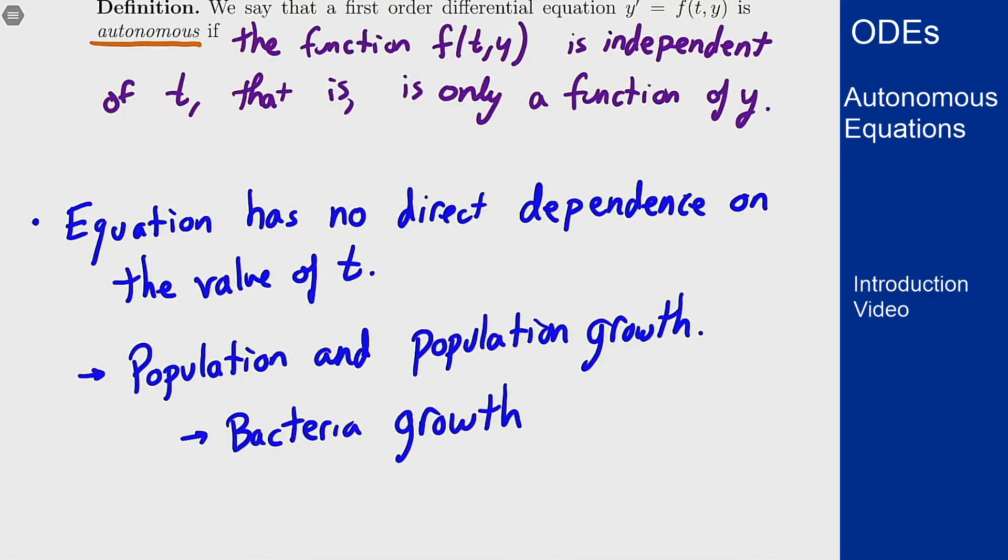But most things we consider in this class, we're talking about population growth. We're talking about growth where the growth rates are independent of time. Things like bacteria or isolated populations where seasons don't really affect things. And so we're going to use these autonomous equations mostly to model population growth as we'll see throughout this section.